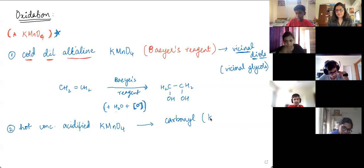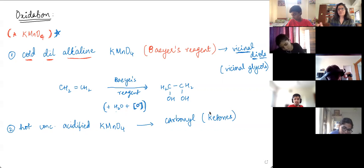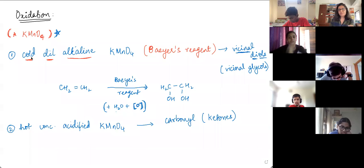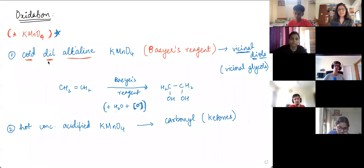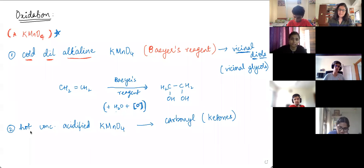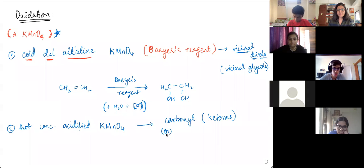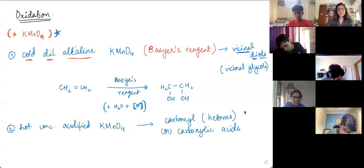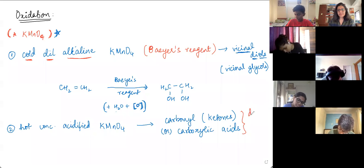When do we use hot and when do we use cold? If you want to control the reaction, slow it down, make it less effective - reduce the temperature, make it cold, decrease the concentration so it becomes dilute. But when you want to speed it up, increase the effectiveness and the rate of the reaction, make it hot and increase the temperature.